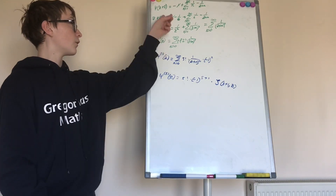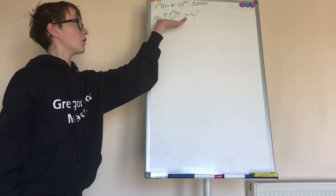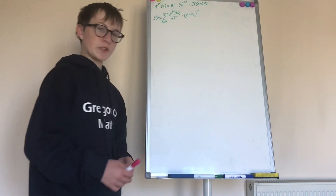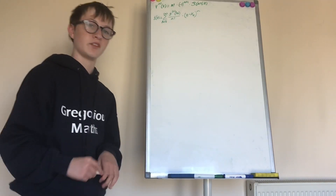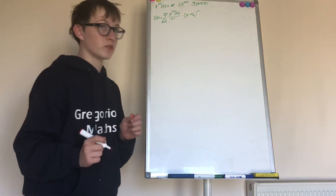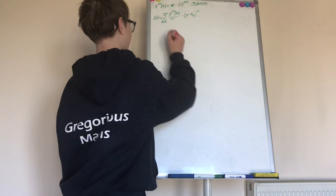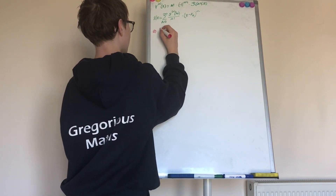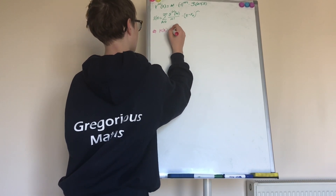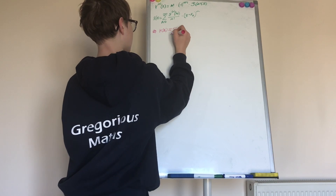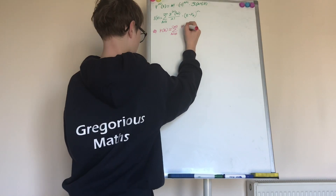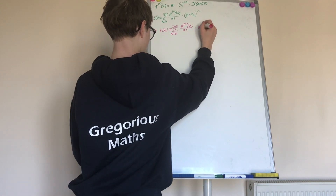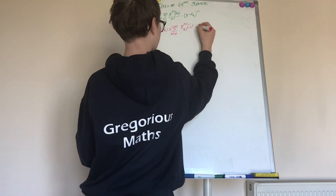Now let's derive the Taylor series for the digamma function. We have our formula which we just derived, and we have the general Taylor series formula — which is like the Maclaurin series except we're not restricted to expanding around zero. We can choose any point. In this case, we'll choose it to be 1, for reasons which will become beautiful later. So the digamma function equals the sum from n equals 0 to infinity of the nth order polygamma evaluated at 1, over n!, times (z−1)^n.